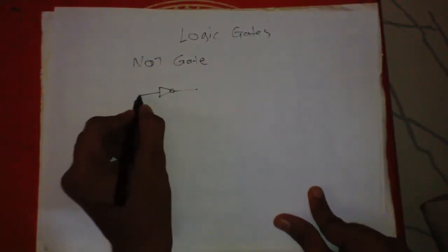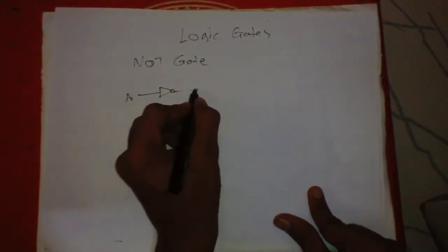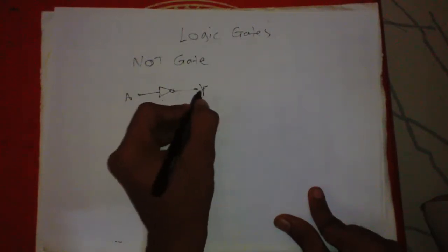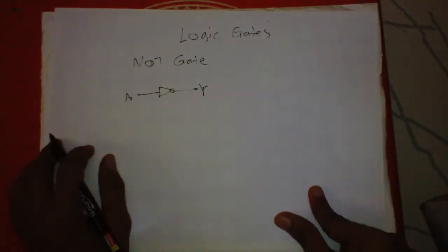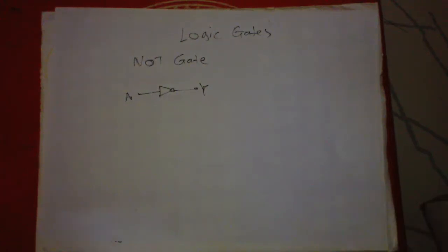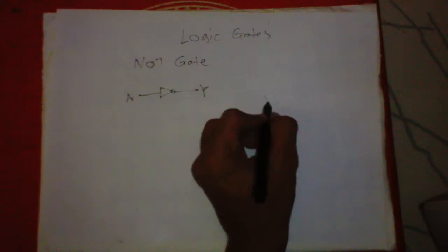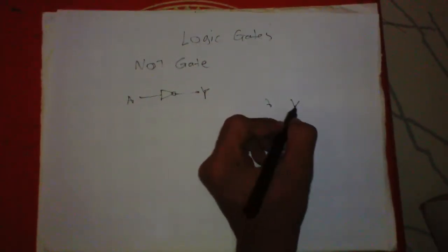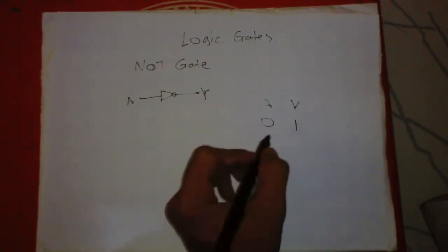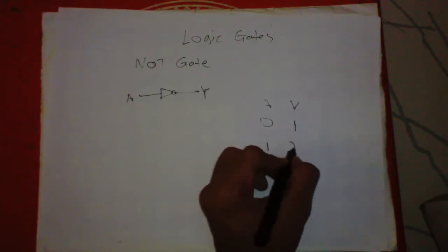A is the input and Y is the output. What does a NOT gate do? It inverses the input, meaning if the input is zero, the output will be one, and if the input is one, the output will be zero.